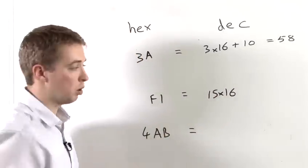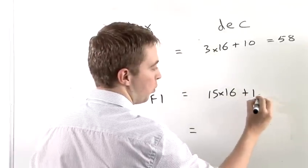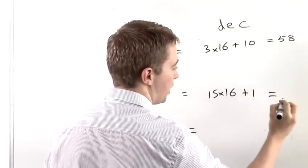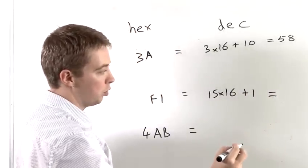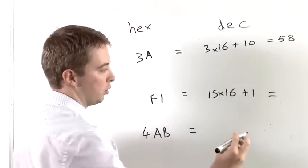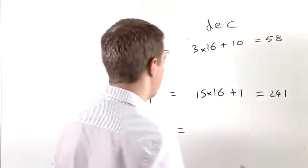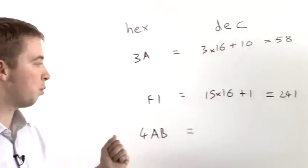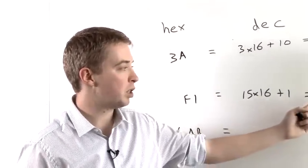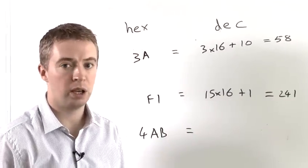And again, 1 is just 1. So we're going to add on 1 at the end. And this is equal to 240 plus 1, which is 241. So the number F1 in hexadecimal represents the number 241 in decimal.